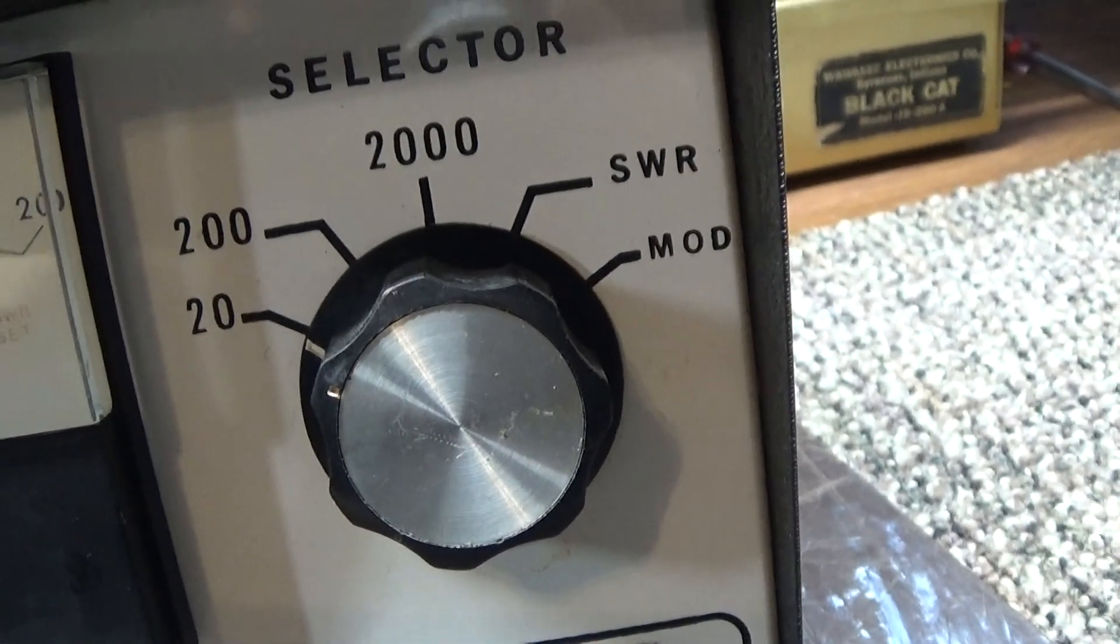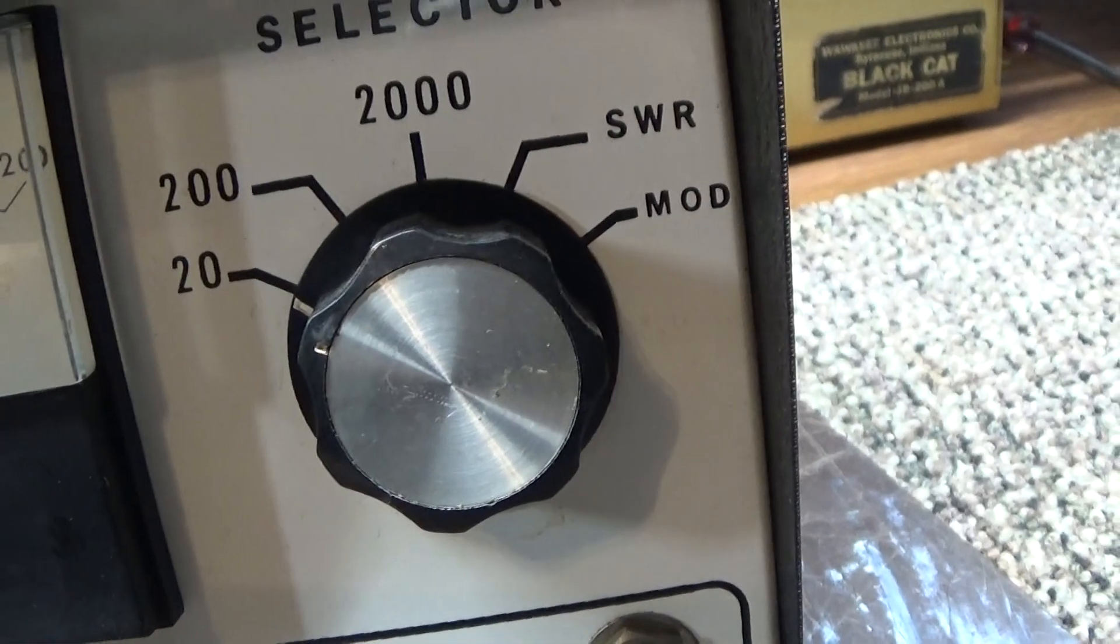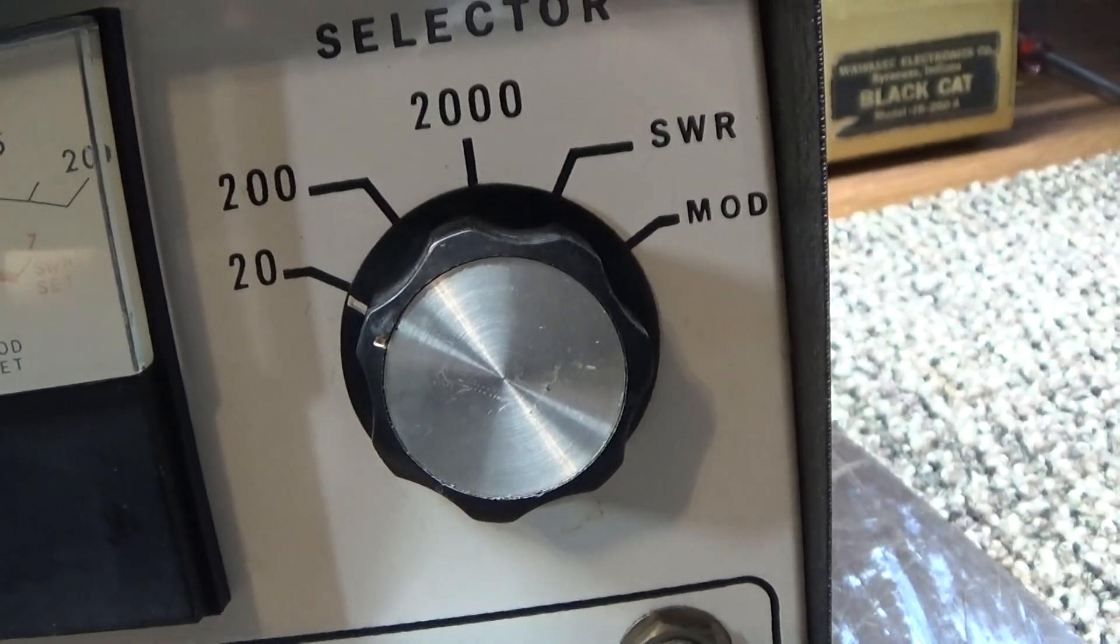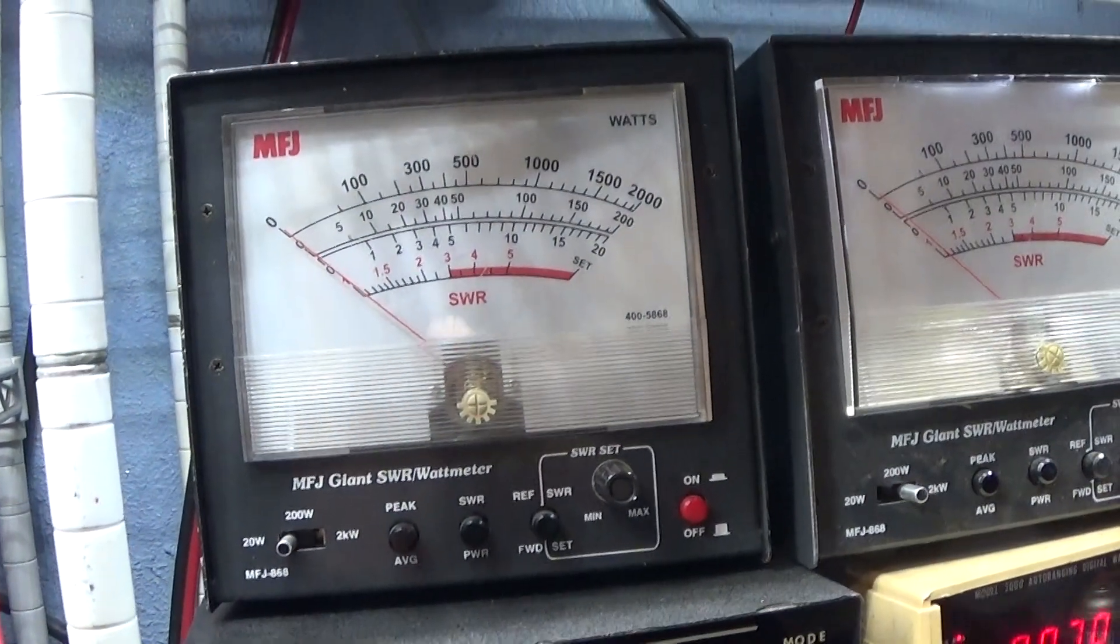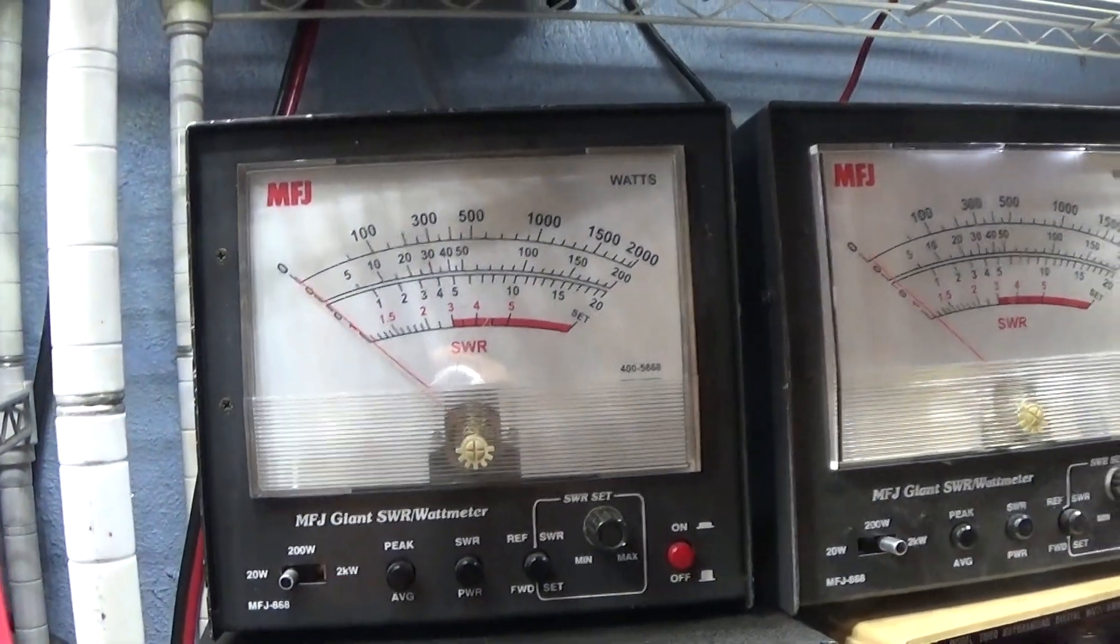It's even got a switch on the back for times two for a 4000 watt scale versus the trusty MFJ giant watt meter calibrated to a Bird.